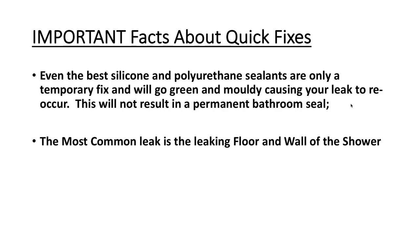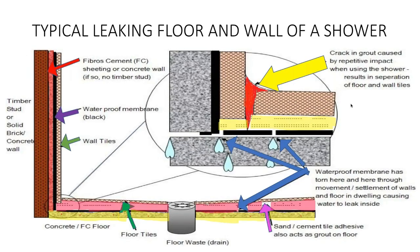Even the best silicone and polyurethane sealants are only a temporary fix — they will go green and moldy, causing the leak to reappear. These will not result in a permanent bathroom seal. The most common leak is at the floor and wall of the shower. Looking at a cutout of a typical shower, you have your shower floor with the floor waste drain in the center. The blue arrows indicate where the floor cement topping is — that area is normally not waterproof, and that is where leaks occur.